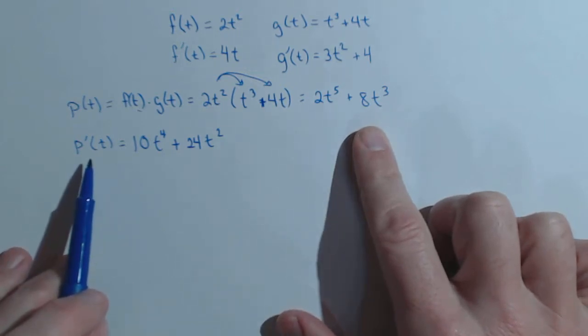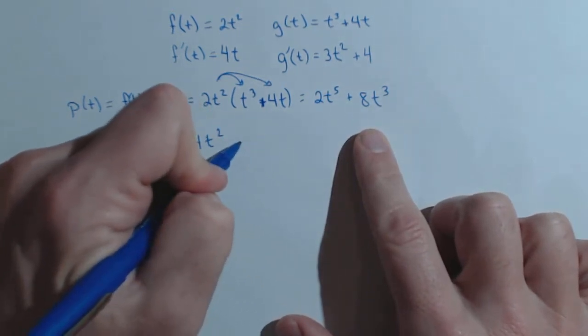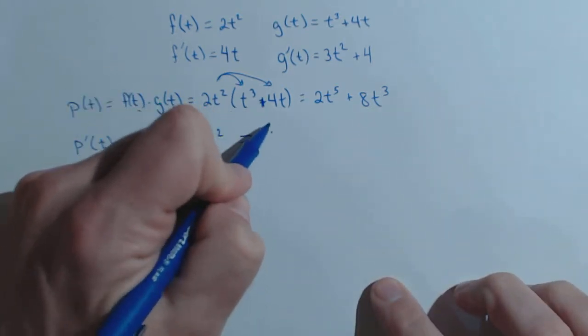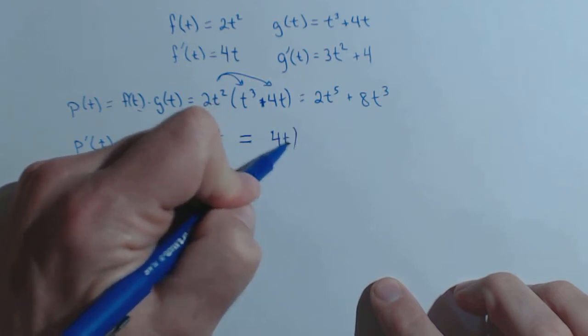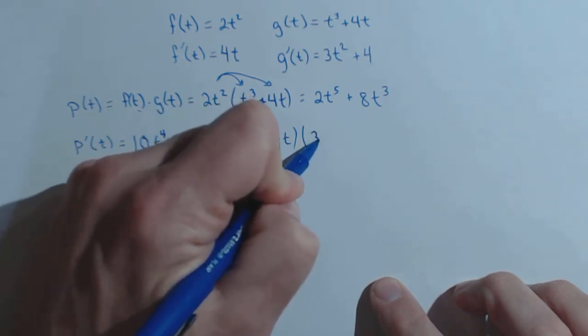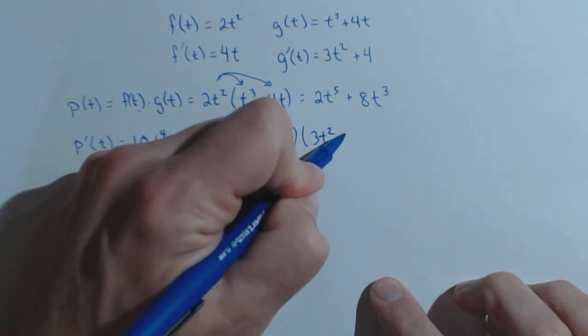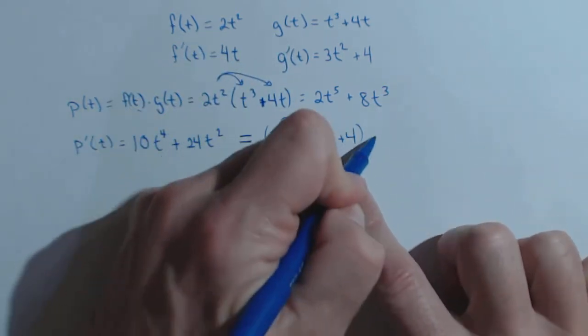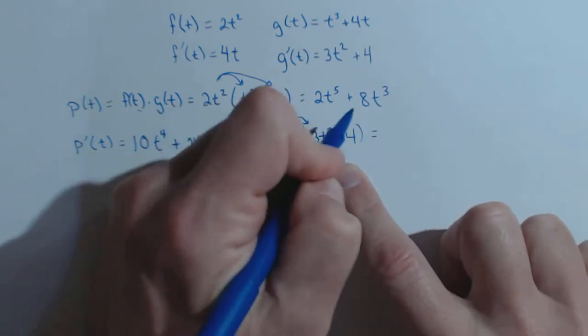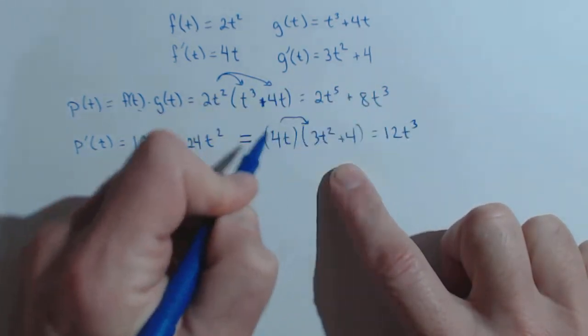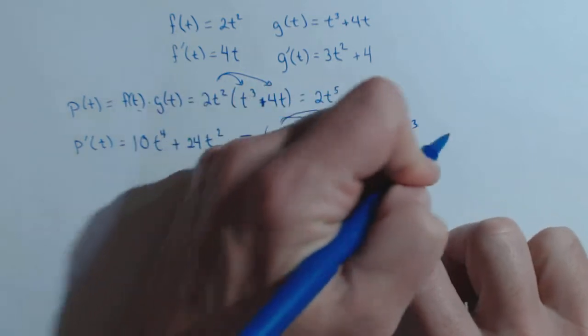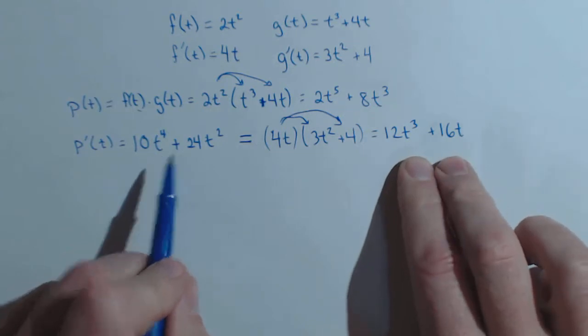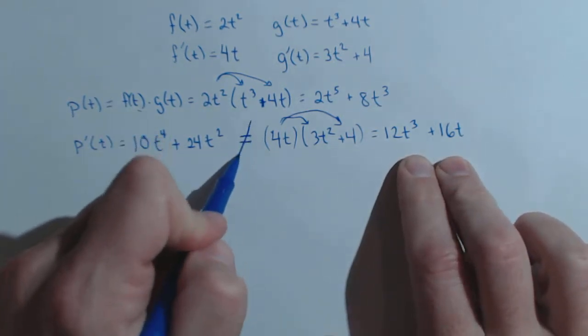All right, so there's p prime of t. Now the question is whether or not this is equal to f prime of t times g prime of t. So 4t times 3t squared plus 4, which is what we found up here, which now if we distribute, we get 12t cubed plus 16t. These are clearly not equal.